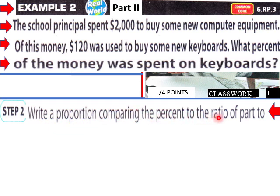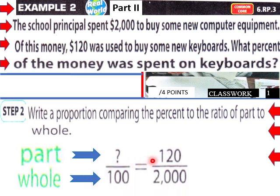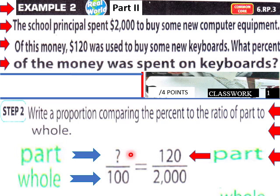To solve this, write a proportion comparing the percent to the ratio of part to whole. We're going to use a proportion to solve this percentage problem. The part is 120 and the whole is 2000, so we have 120 over 2000. The part is in the numerator and the whole is in the denominator.